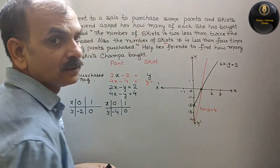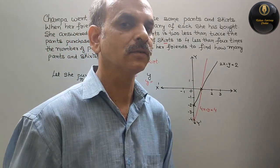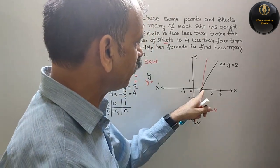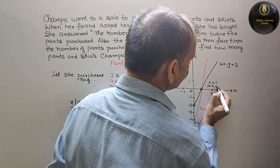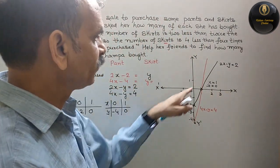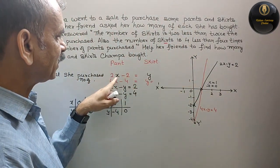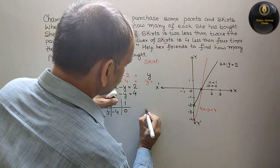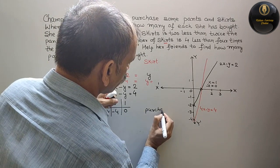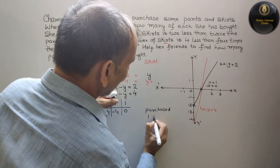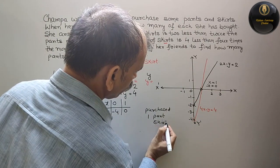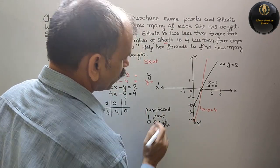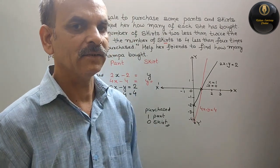Now see where both lines intersect — that is your solution. The intersection point is X = 1, Y = 0. That means Champa purchased 1 pant and 0 skirts. This is how you solve this problem using graphs.